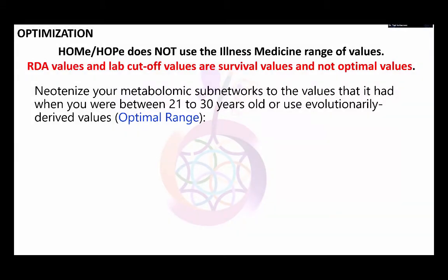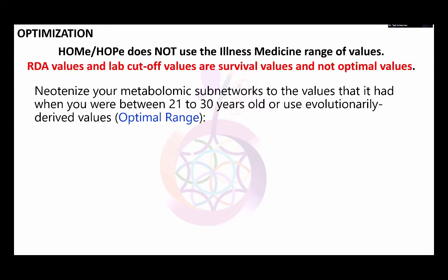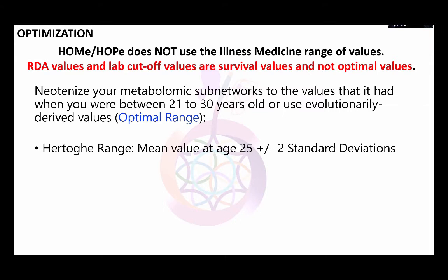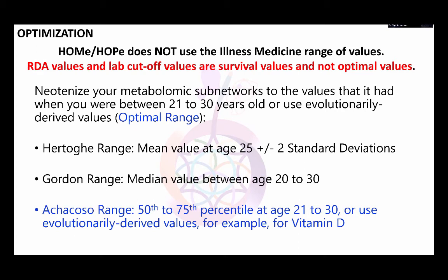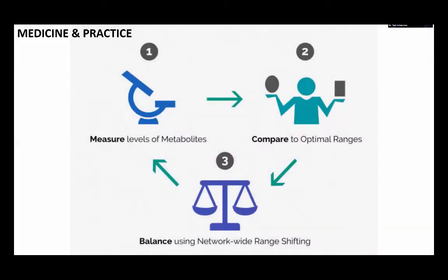For optimization, we don't use illness medicine ranges of values. Patients sometimes come to me saying they have normal thyroid values, but the recommended daily allowances in nutrition and laboratory cut-off values for diseases are survival values, not optimal values. So we neotenize — make younger — your metabolic subnetworks to values from when you were between 21 and 30 years old, because that's assumed to be the optimal functioning of our metabolic pathways. Or we use evolutionarily derived values as the optimal range. Terry Hirtog in Europe uses the mean value at age 25; Mark Gordon in the US uses the median value between age 20 to 30; I use the 50th to 75th percentile at age 21 to 30, or evolutionarily derived values — for example, for vitamin D.